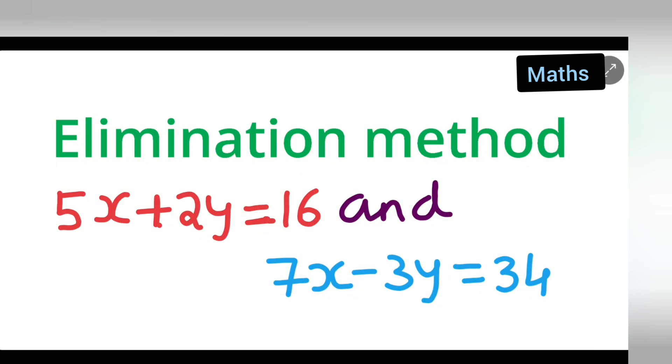Welcome for today's class of mathematics. Today let us do elimination method. The question is given to be like this: 5x plus 2y is equal to 16 and 7x minus 3y is equal to 34. So we have to find the solution of the following by elimination method.